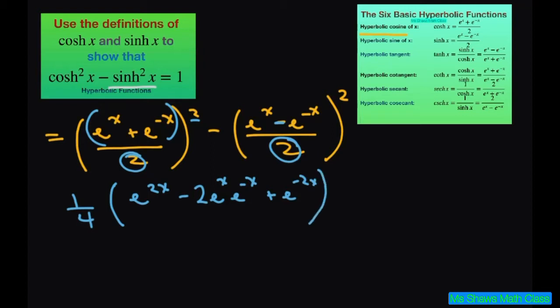And then, for this piece, we're going to get minus and do the same thing. Oh, this one's going to be a plus. So, this is going to be e to the 2x and this one's going to be minus 2 e to the x e to the negative x power plus e to the negative 2x power.